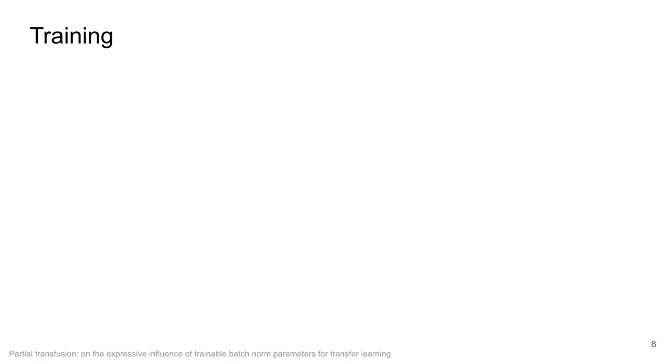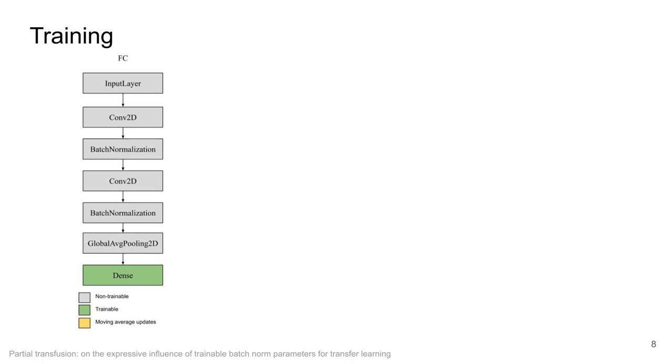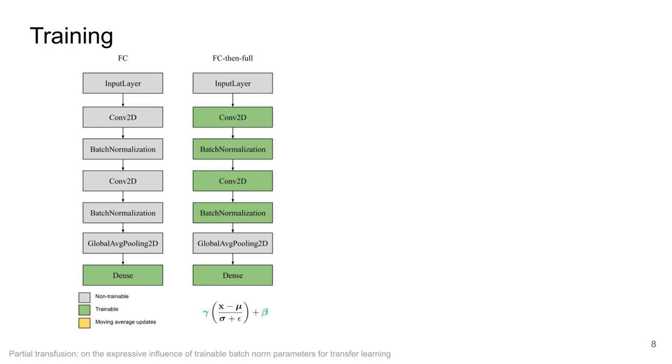For our experiments we performed comparisons between different transfer learning training methods. The first one is the usual of using the existing model as a feature extractor and only training the fully connected classification layer. The second one is first training the fully connected layer and then fine-tuning both the fully connected layer and the full model.